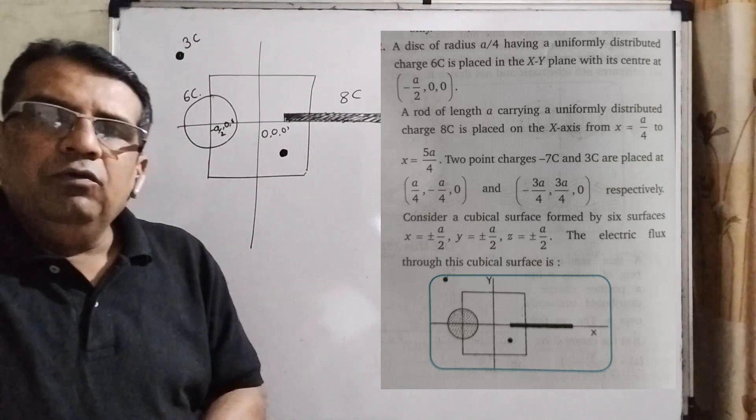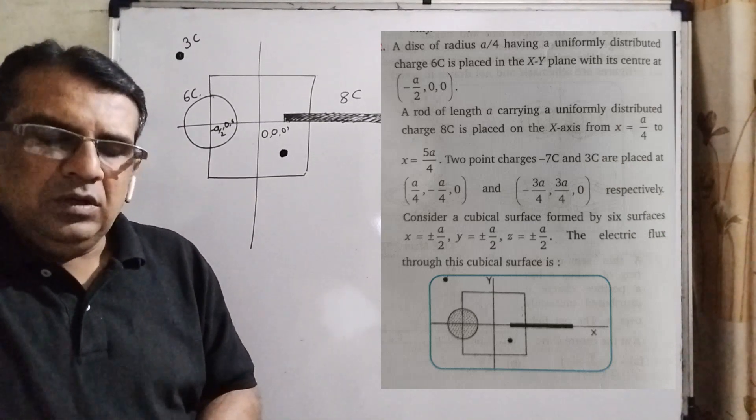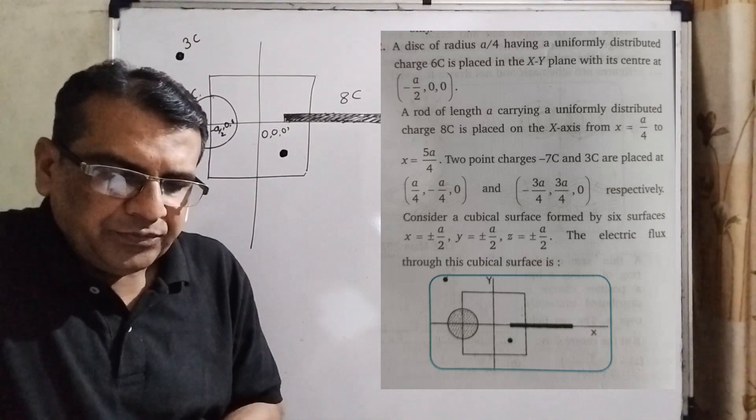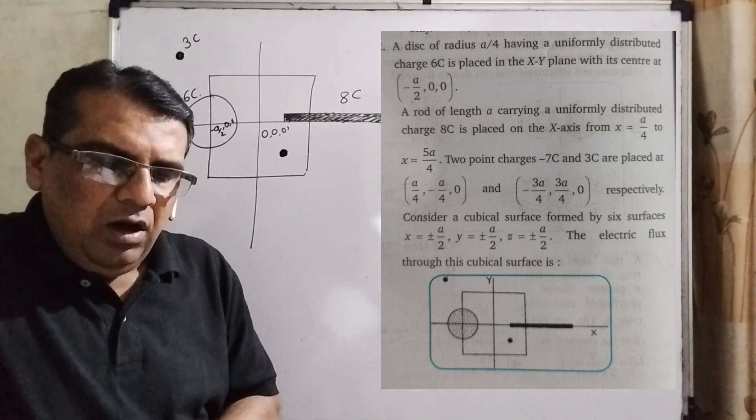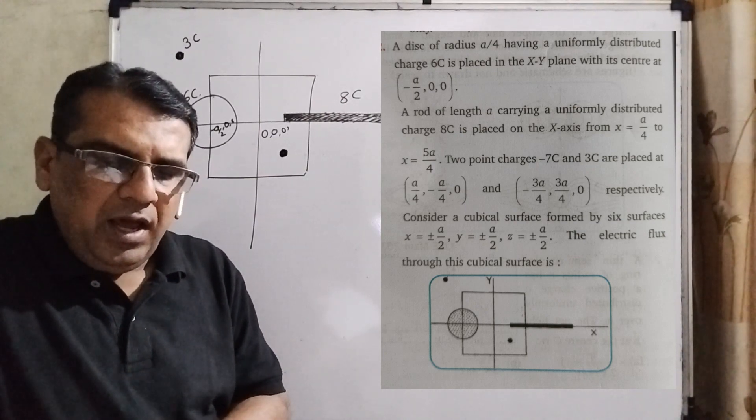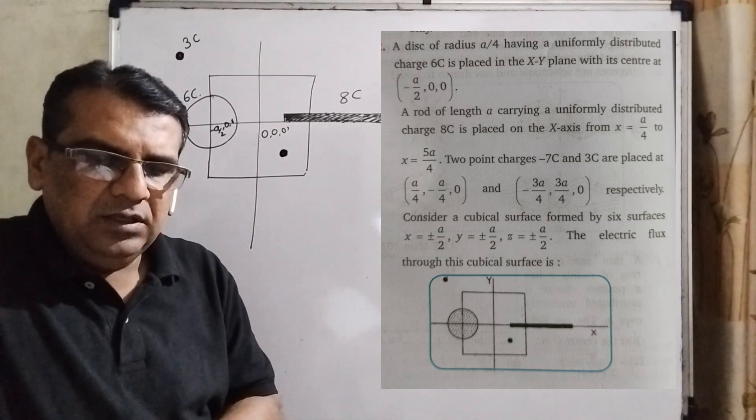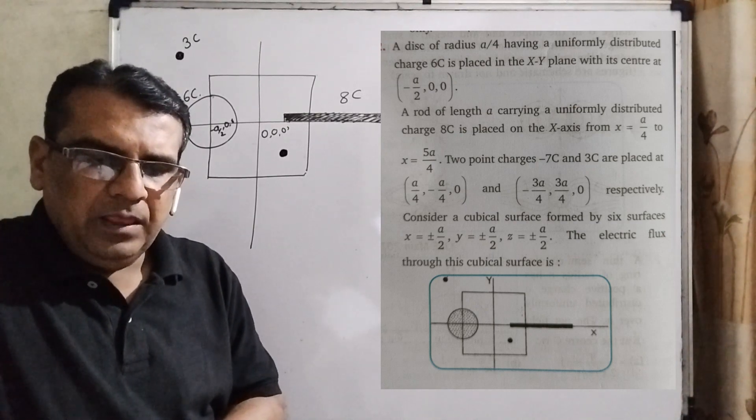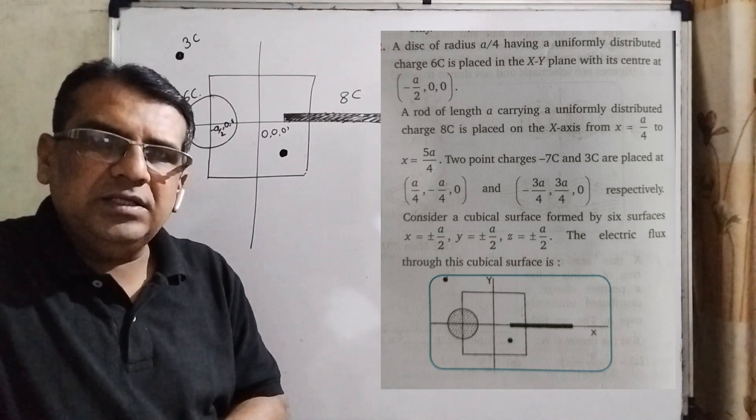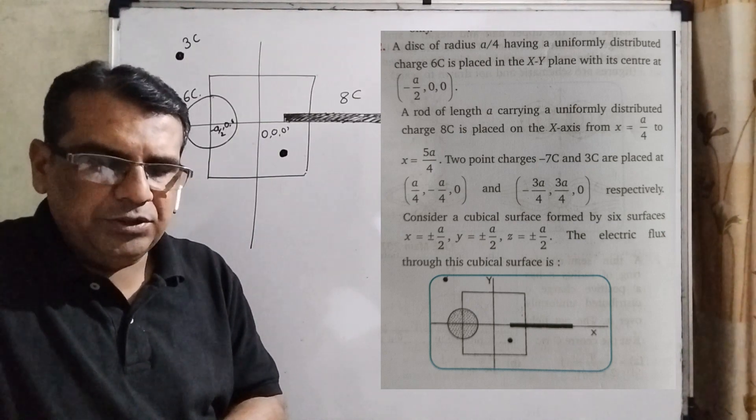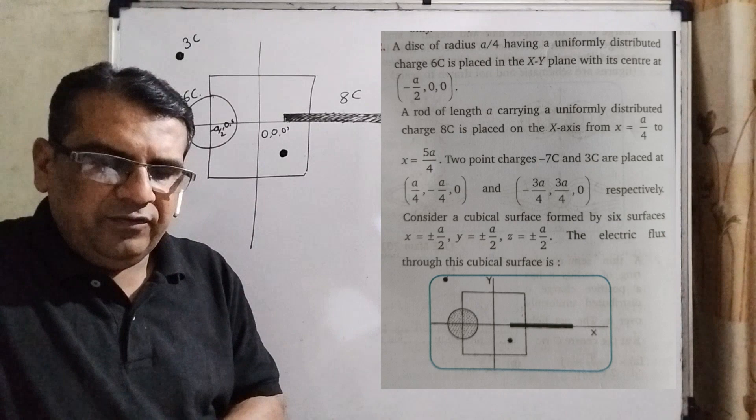Let's see what the question says. The question says, a disk of radius a/4 having a uniformly distributed charge 6C is placed in the xy plane with its center at -a/2, 0, 0.